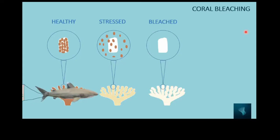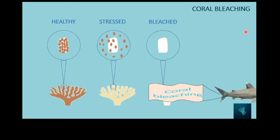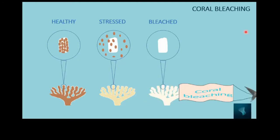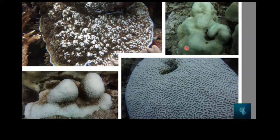So coral bleaching is really just a condition of stress that leads to us looking through the transparent tissue onto the white skeleton. Last year we saw a lot of coral bleaching at the Banda Islands. Here are some examples of how corals look when completely bleached or just starting to bleach — the most exposed parts turn white, the rest is still brown, some look slightly yellow, and some are only partially bleached.